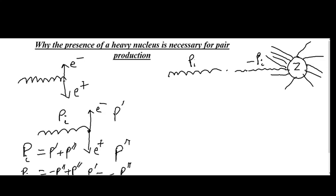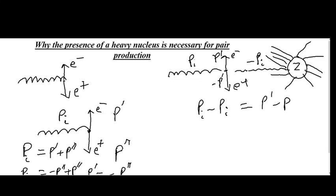When these two photons interact, the pair production process occurs in which electron and positron are created. The total initial momentum is Pi plus minus Pi, which equals zero, and the total final momentum is P prime plus minus P prime, which also equals zero. Since total initial momentum equals total final momentum, the law of conservation of momentum is valid in this case.